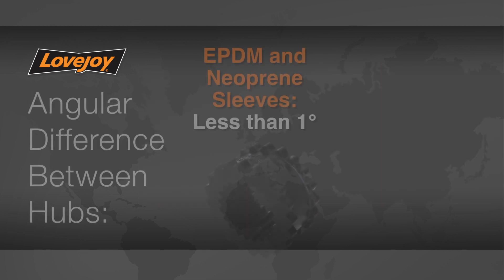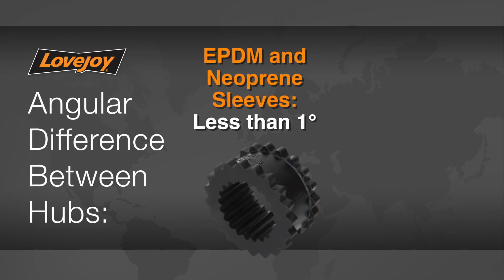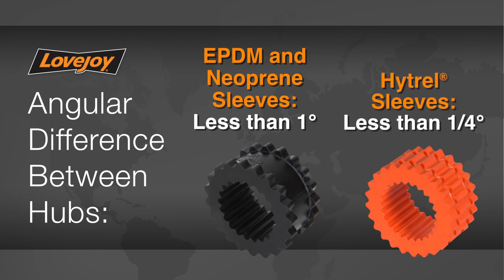Note that the angular misalignment should not exceed one degree for EPDM and neoprene sleeves or a quarter of a degree for Hytrol sleeves. If the alignment falls outside these parameters, you may need to move the second hub or realign the equipment to correct this condition.